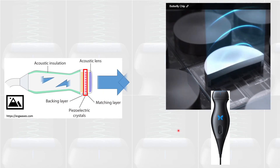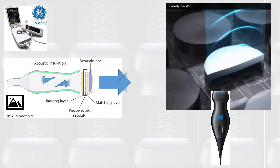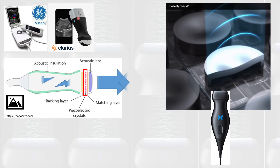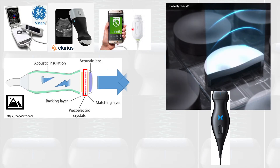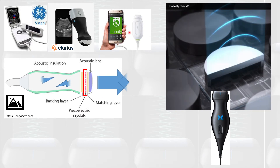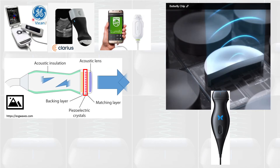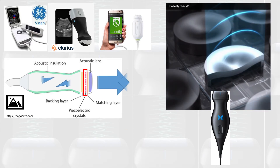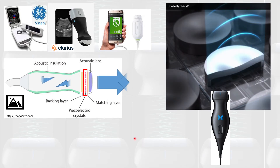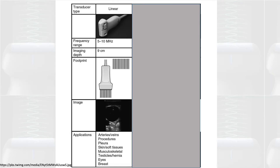There are other good handheld ultrasound devices. I've used the V-scan before for a couple of years, and there's also the Clarius device, the Lumify, and others. Some colleagues mention those have good images too. I'm not entirely sure how all of them work internally, but V-scan uses piezoelectric crystals. These are examples of how handheld ultrasound devices operate.